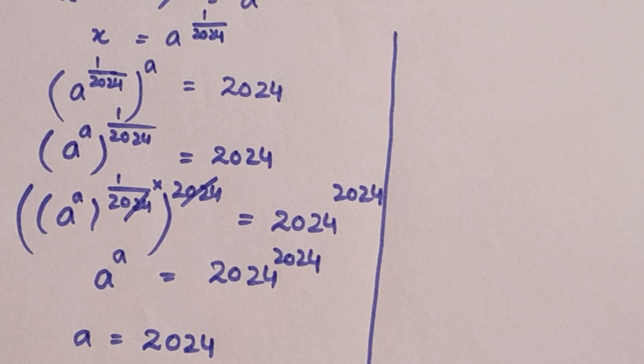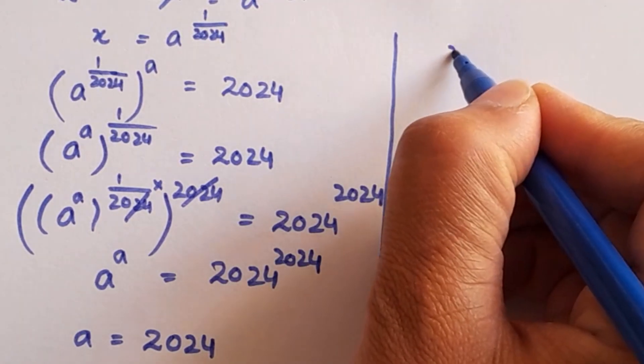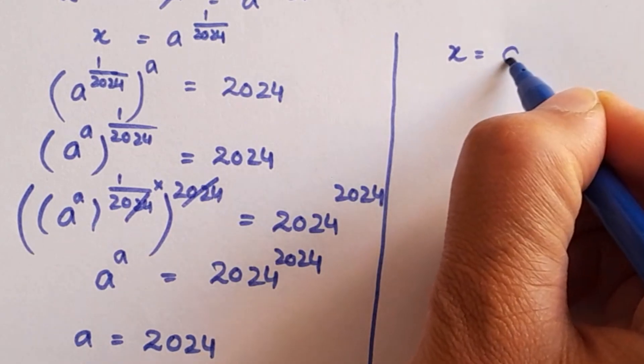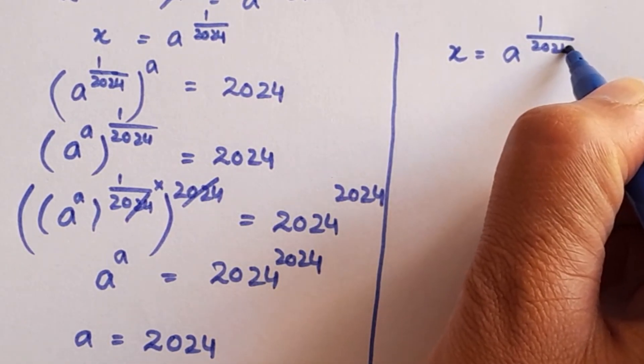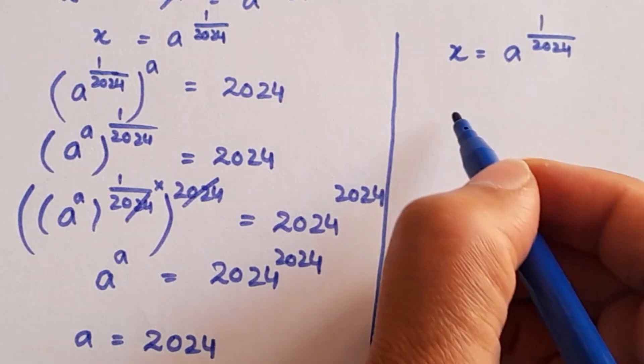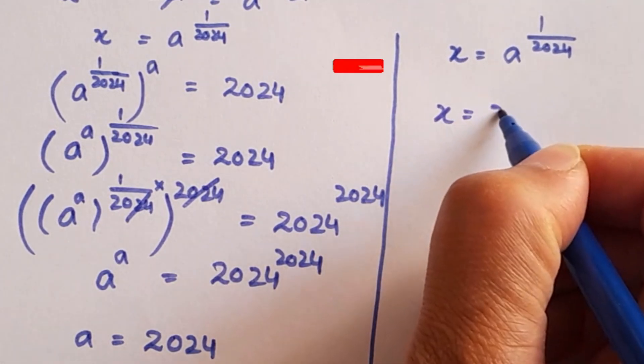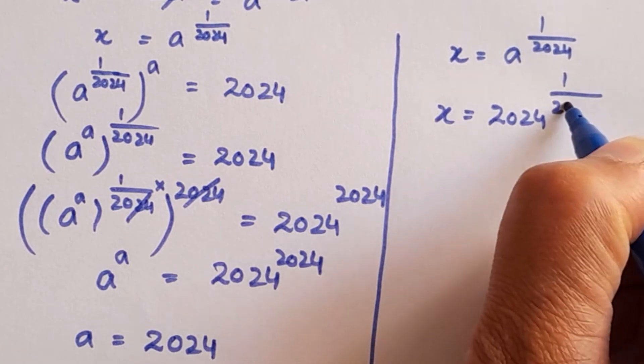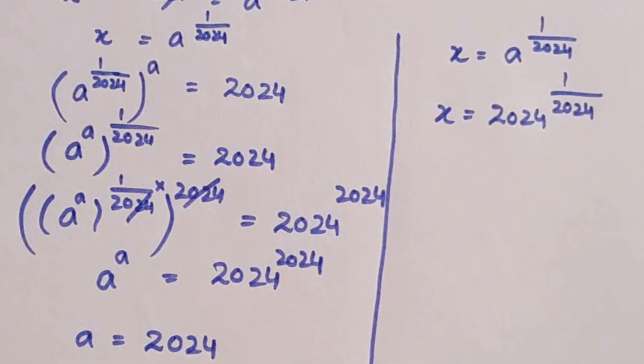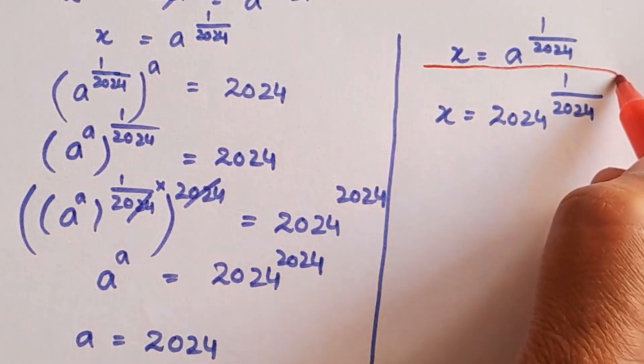That equation will equal x equals a to the power 1 over 2024. Let's put the value of a: x equals 2024 to the power 1 over 2024. This is the final and required value of x.